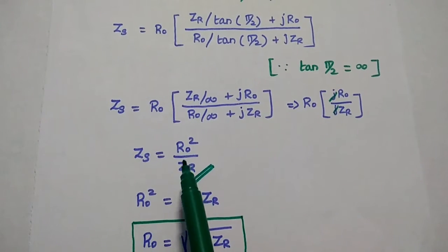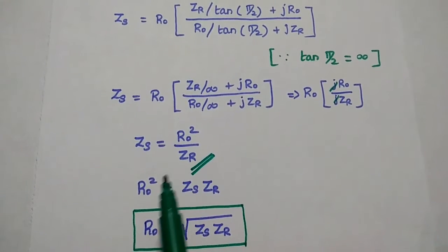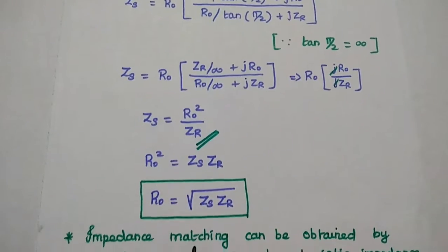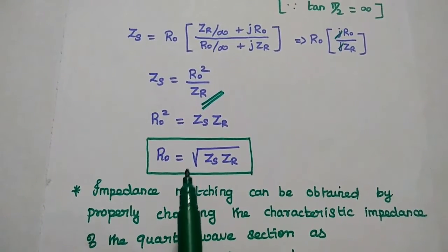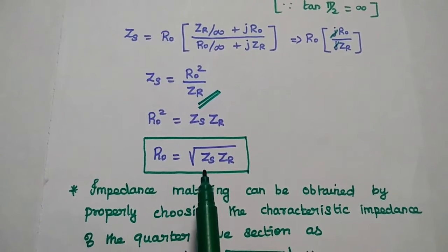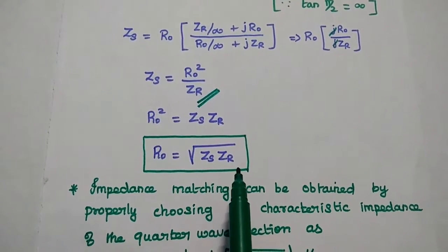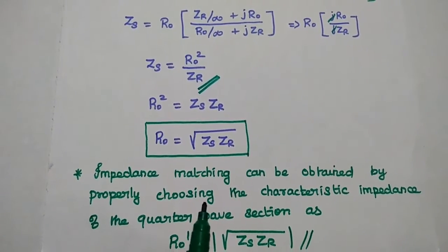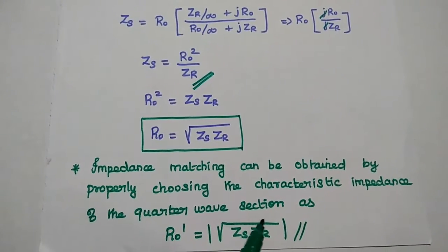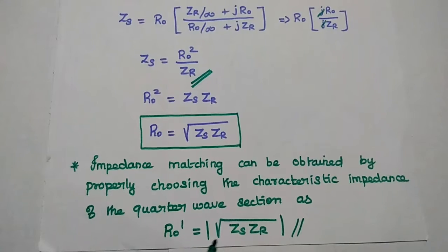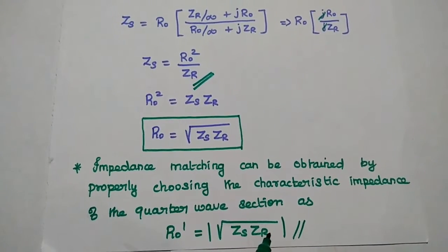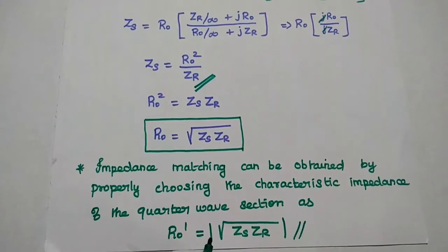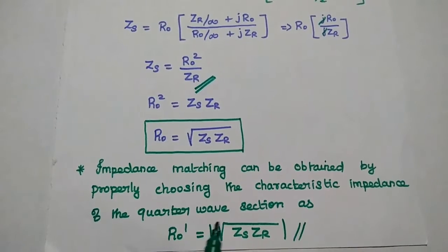Here R naught is the characteristic impedance. From this we can find R naught squared equals Zs into ZR. Taking the square root, the characteristic impedance for the quarter wave line equals the square root of Zs times ZR. So matching can be obtained by properly choosing the characteristic impedance of the quarter wave section as R naught dash equals square root of Zs ZR. Whenever we select the quarter wave section with this characteristic impedance, we can match the load impedance with the source impedance.